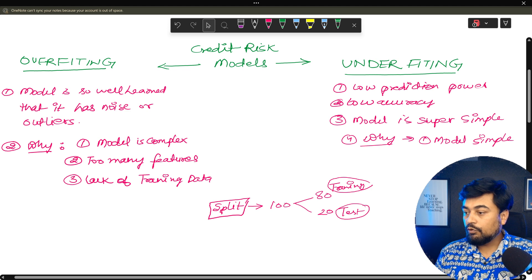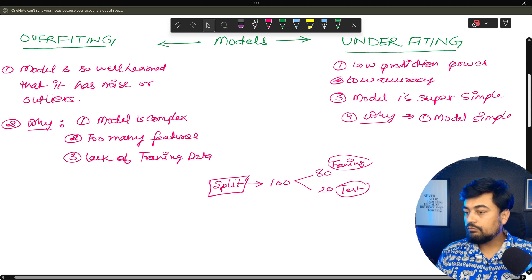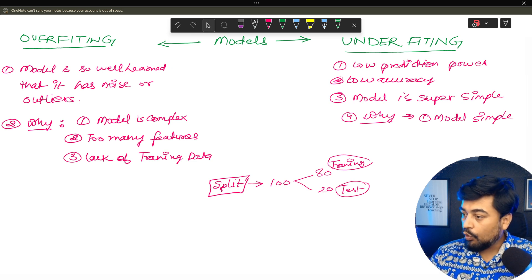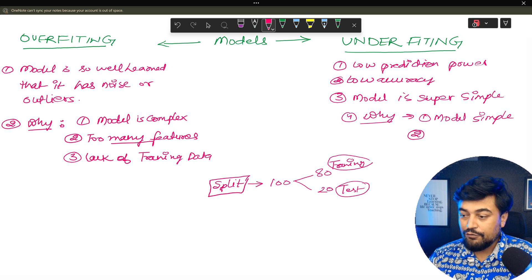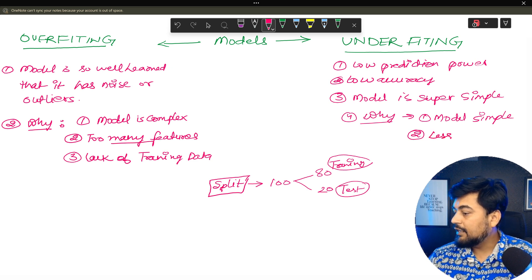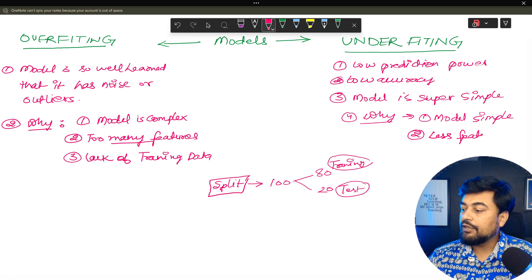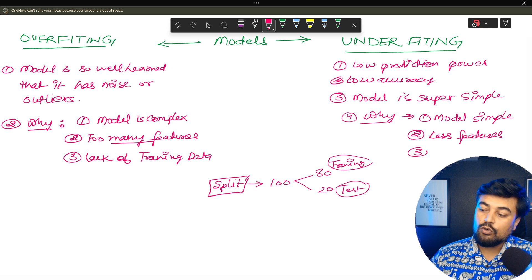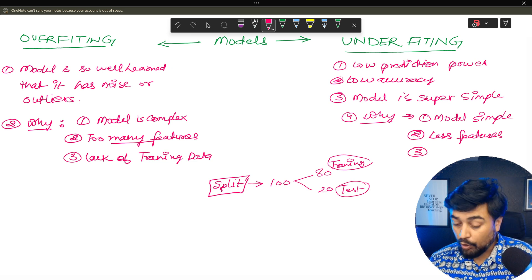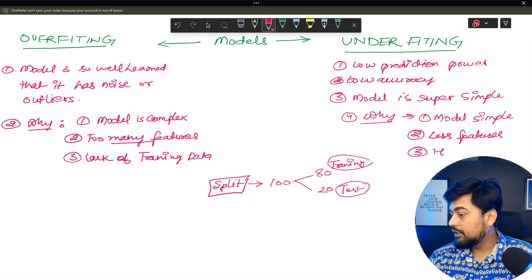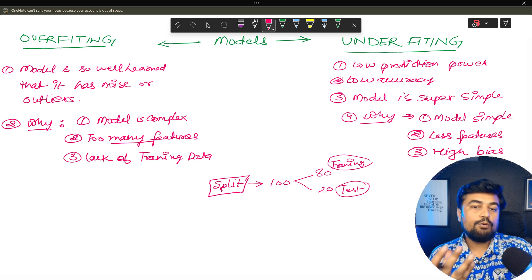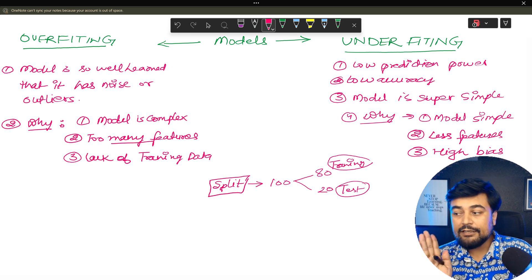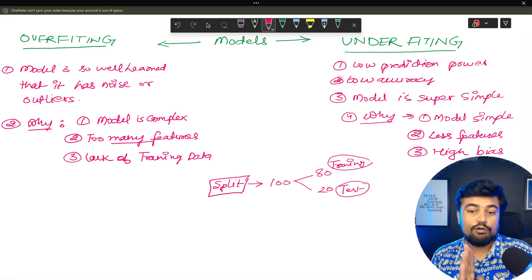What are the other reasons for underfitting? Number one: the model is too simple. Number two: less features — you are giving so few features that the model is not able to understand the data properly. Number three: your model is highly biased toward any single type of customer or customer base. So this is all about overfitting and underfitting.